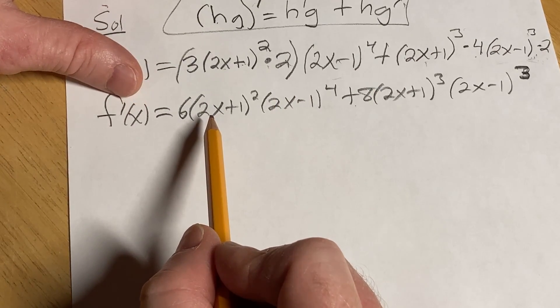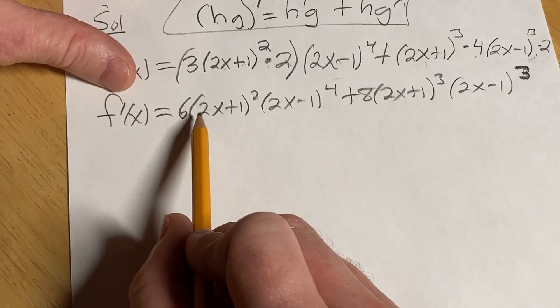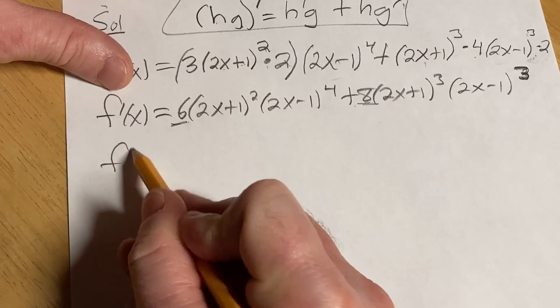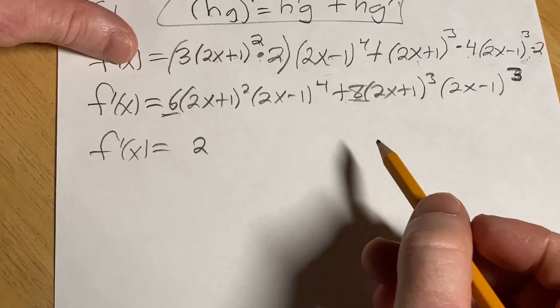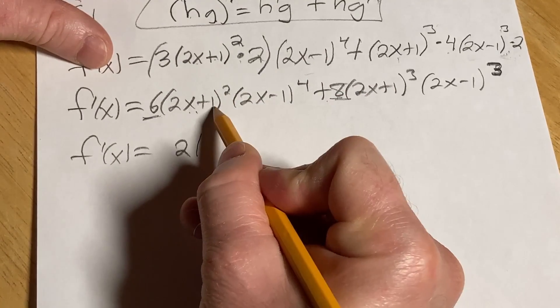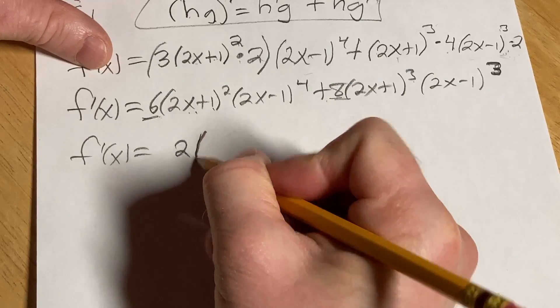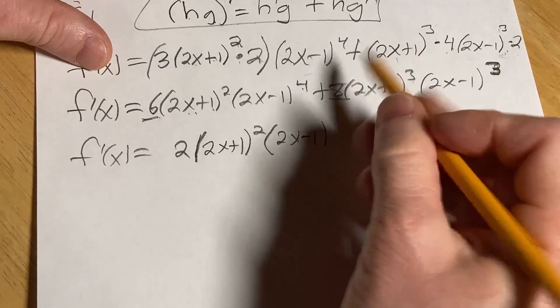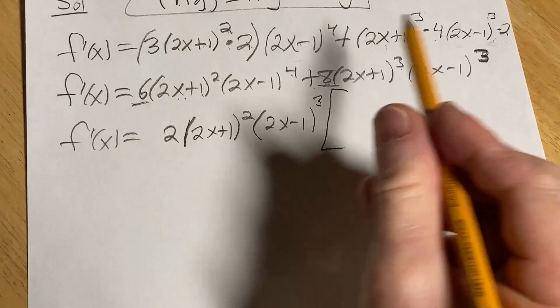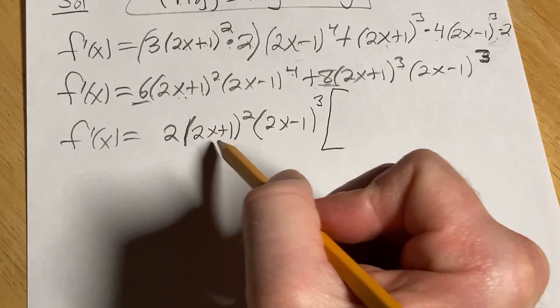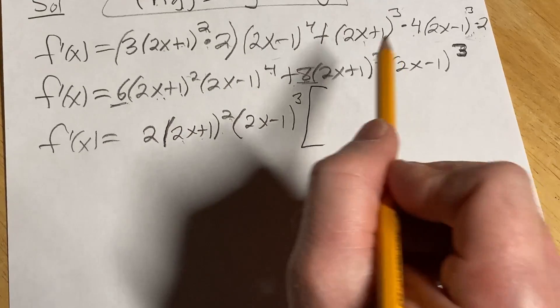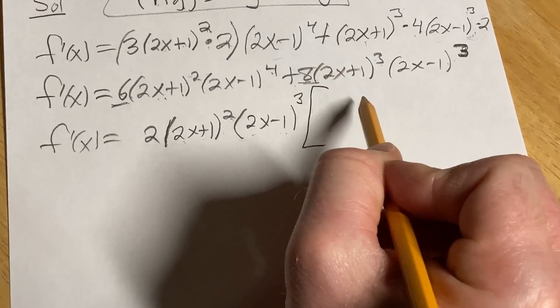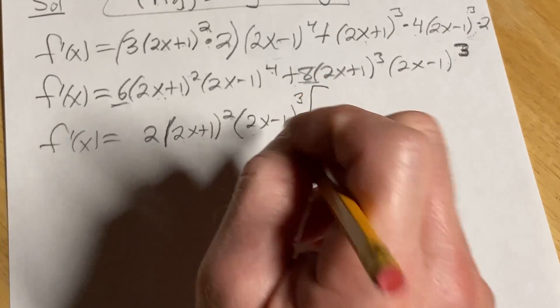So now what we can do is we can pull out some stuff. So I guess we can pull out a 2. That might be something we can pull out, because there's a factor of 2 here and a factor of 2 here. And then what you want to do is you want to pull out the ones with the smallest exponents. So let's focus on 2x plus 1. We have a squared and a cubed. So you want to take out the one that has a squared. And then 2x minus 1. We have a 4 and a 3. You want to take out the one that has a 3. Brackets. We're factoring. So again, pulled out the 2. Pulled out 2x plus 1 squared because it's the smaller of the exponents. That always works. And then we pulled out 2x minus 1 cubed, again, because it's the smaller of the exponents. Really, really important to use this technique. This is a very powerful technique.